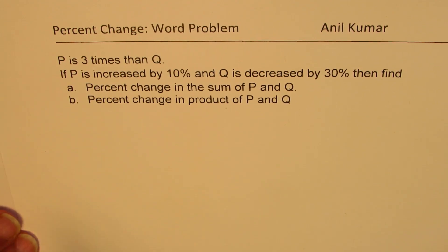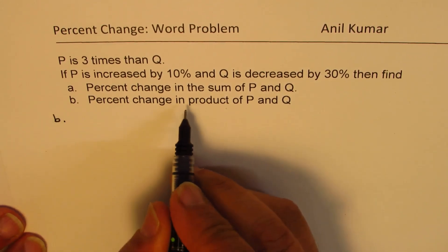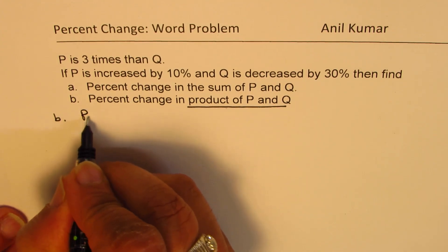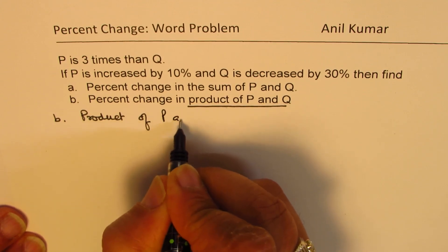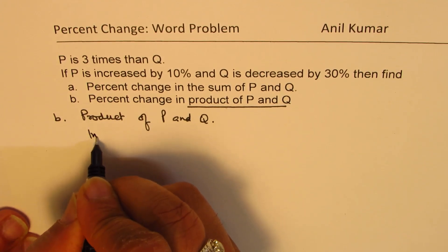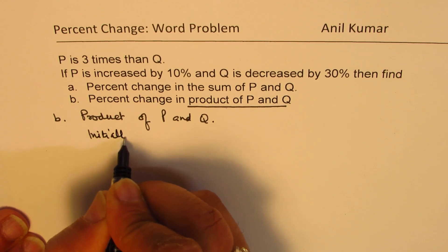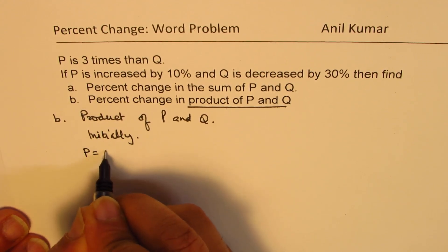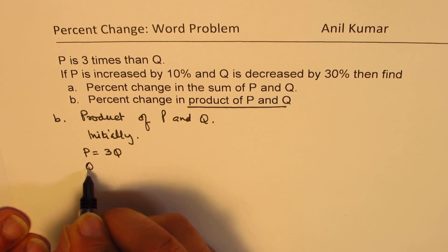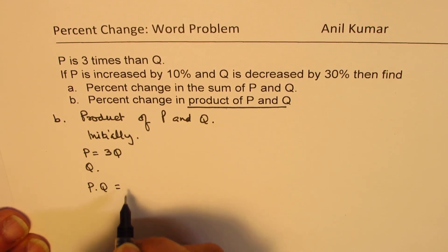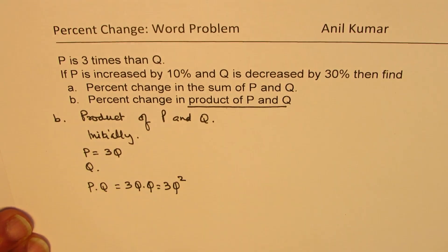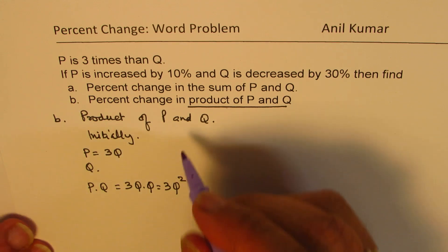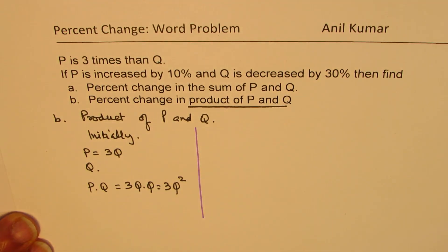In part B, we will now talk about product of P and Q. So to start with, what we have, we have P equals to 3Q and we have Q. So the product between P and Q is basically 3Q times Q, which is 3Q squared. So initially, the product is 3Q squared.